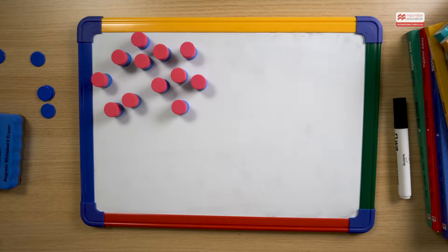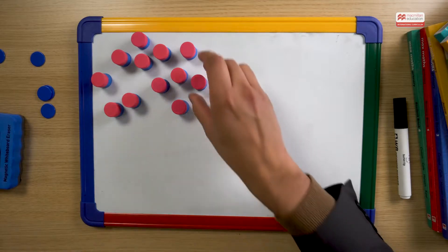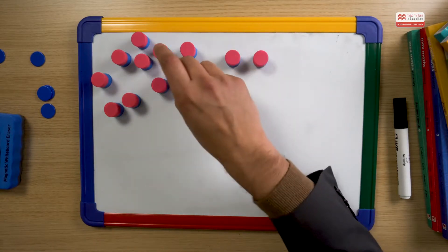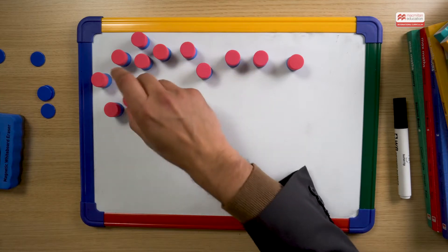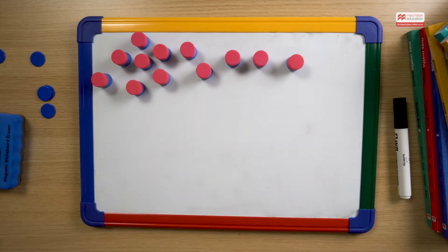And so one question from the book shows us that we have 12 counters and I might ask my children can you make as many different rectangles as possible with the 12 counters?